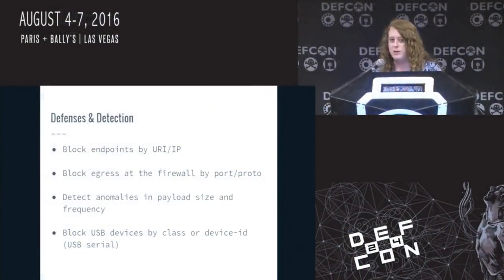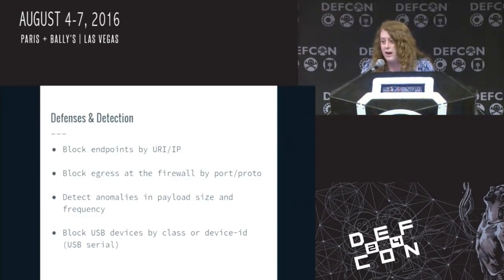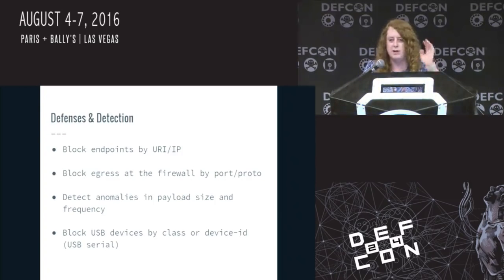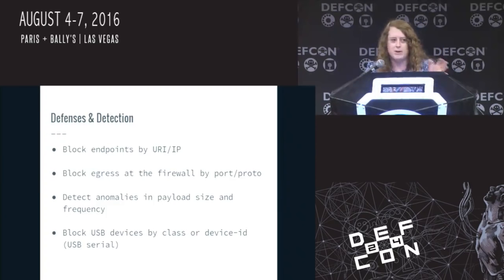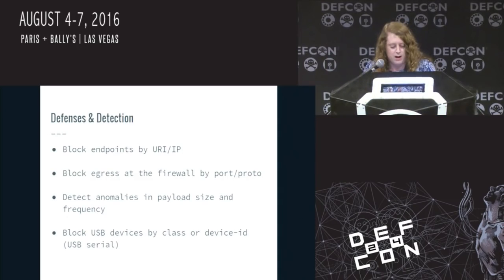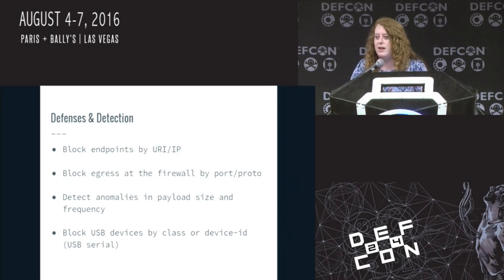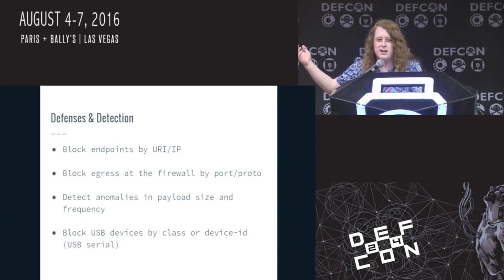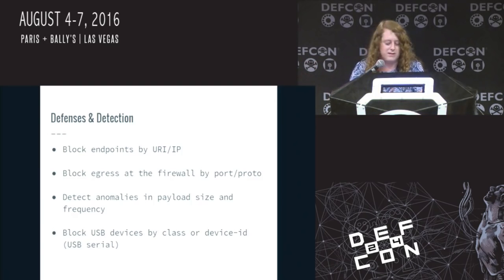We can block endpoints — block individual malware endpoints, block some stuff by URI or IP. So every time I stand up a fake service with Pastebin code on it, you block it. I can also block egress at the firewall by port, protocol, or application firewall — just shut that down. You can also try to detect anomalies in payload size — look at the frequency. Why is this machine turning on at 3 in the morning, getting on Facebook and uploading 6 gigs of data? You can look for that stuff. And you can block USB devices by class or device ID.